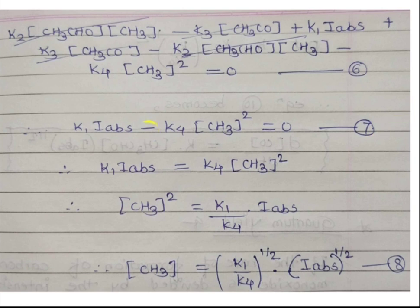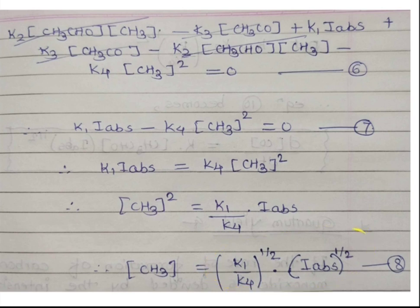Rearranging equation 7: K1×I_absorbed = K4×[CH3]². Therefore [CH3]² = (K1/K4)×I_absorbed. Taking the square root: [CH3] = (K1/K4)^(1/2) × I_absorbed^(1/2). This is equation number 8.